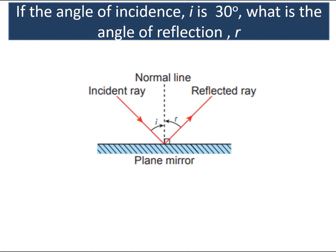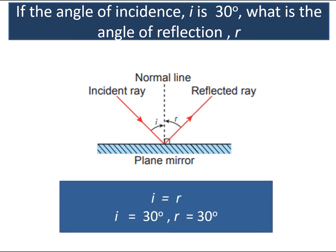If the angle of incidence, I, is 30 degrees, what is the angle of reflection, R? I equals R. If I is 30 degrees, R is also 30 degrees.